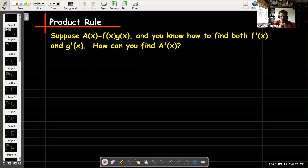Suppose that your function is made up of the product of f and g, and that you know how to find both f'(x) and g'(x). How can you use that information to find the derivative of the product? That is, how can you find A'(x)?